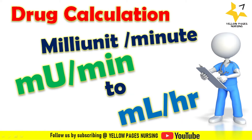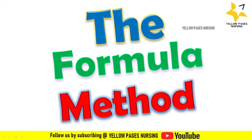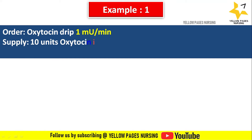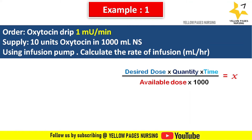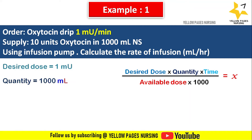Using the formula method, let's discuss the first example. Doctor's order reads: oxytocin drip 1 milli-unit per minute; supply 10 units oxytocin in 1000 ml NS using an infusion pump; calculate the rate of infusion in ml per hour. The formula is: desired dose × quantity × time ÷ (available dose × 1000) = x. Here the desired dose is 1 milli-unit, quantity is 1000 ml, and available dose is 10 units.